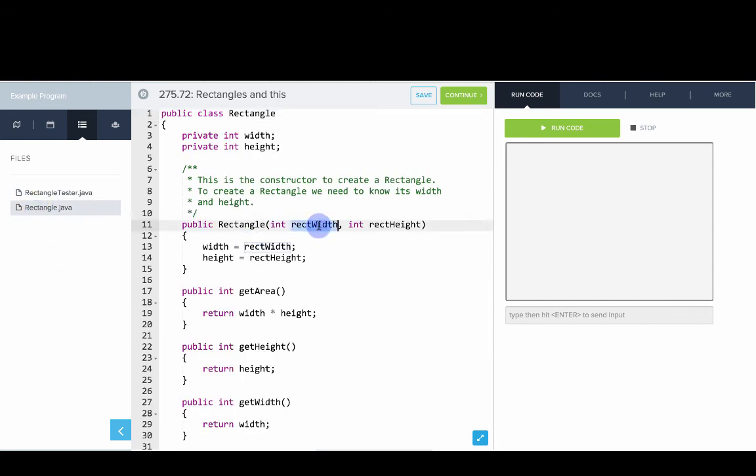But I want to try changing it from instead of rect width to width and height. In this example, we're just going to run it to see what it does. Okay, and what it does is it says that the rectangle has a width and height of zero and an area of zero, even though that's not what we intended.